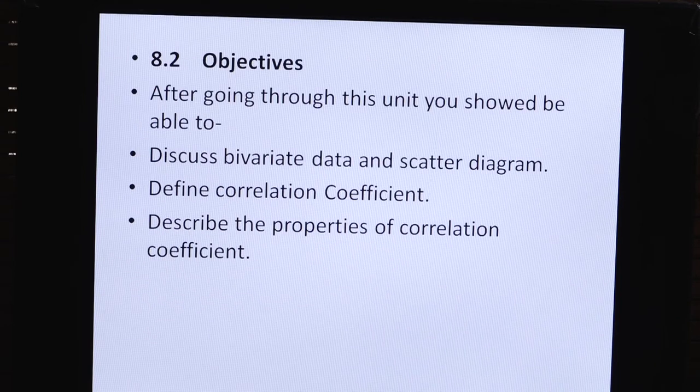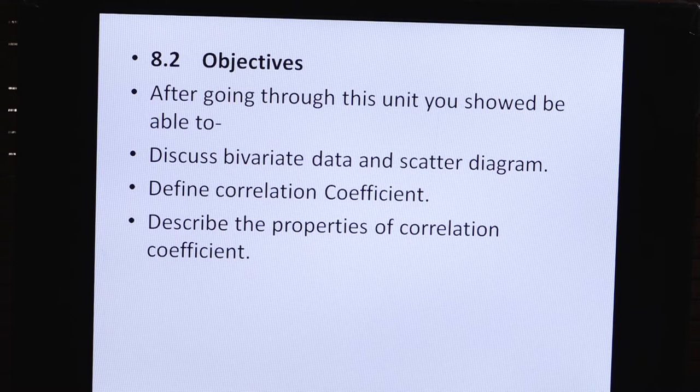Objectives: इस Unit को पढ़ने के क्या-क्या Objectives हैं? After going through these Units, you should be able to discuss Bivariate Data and Scattered Diagram, define Correlation Coefficients and describe the Properties of Correlation Coefficients. मतलब, इस Unit में Bivariate Data and Scattered Diagram के बारे में Discuss किया जाएगा और Correlation Coefficients को define किया जाएगा।